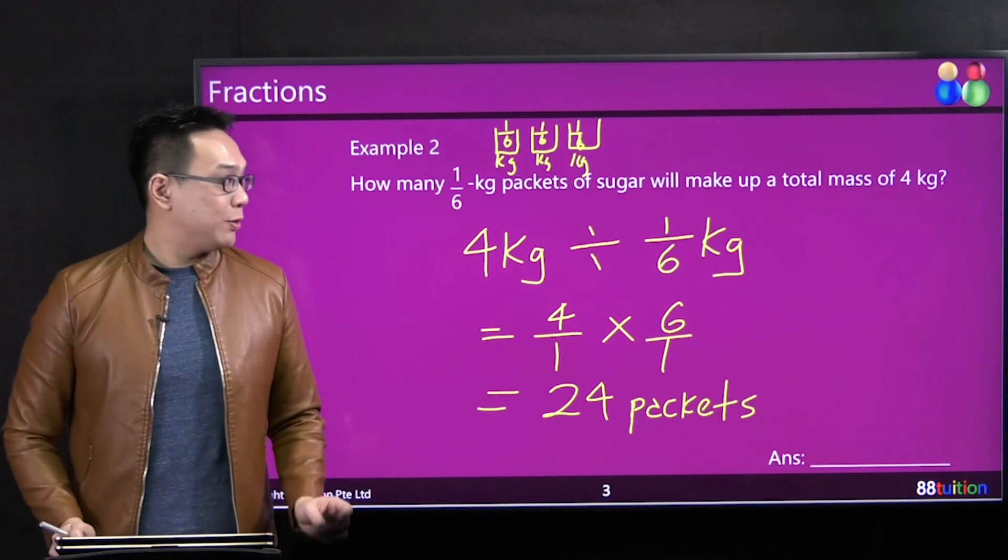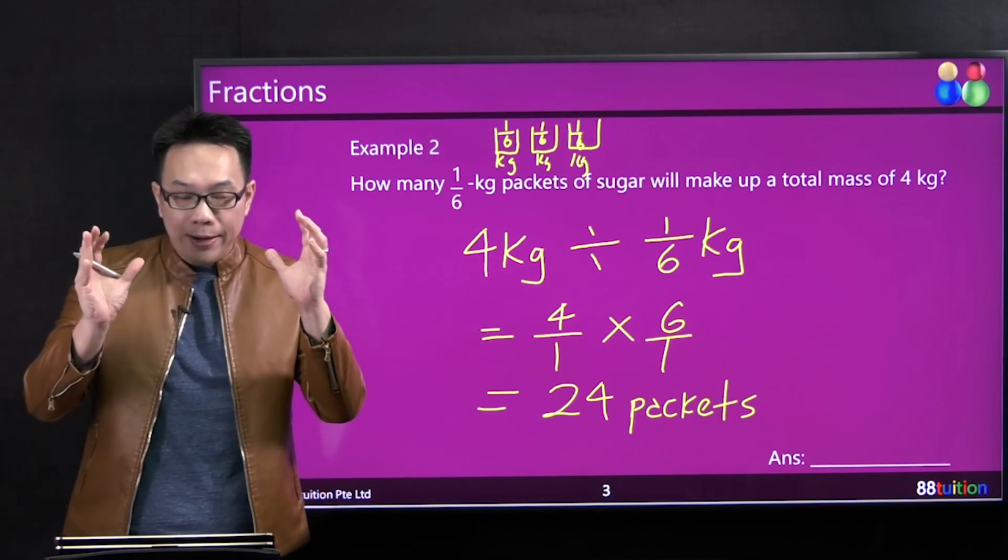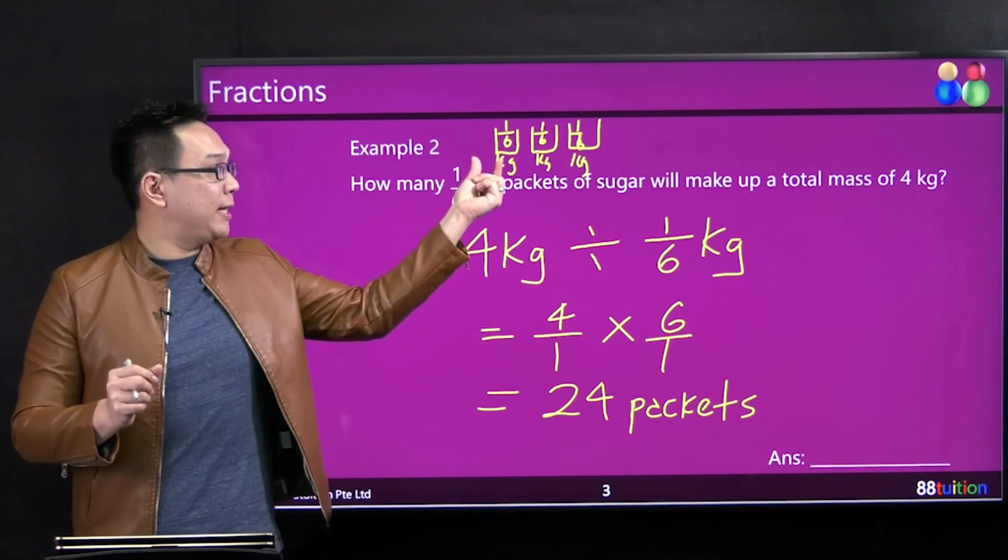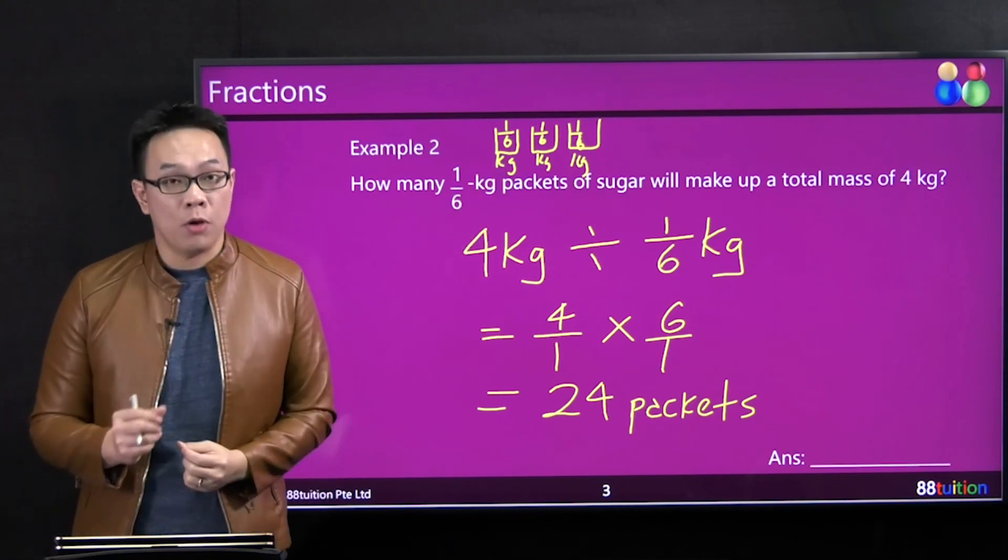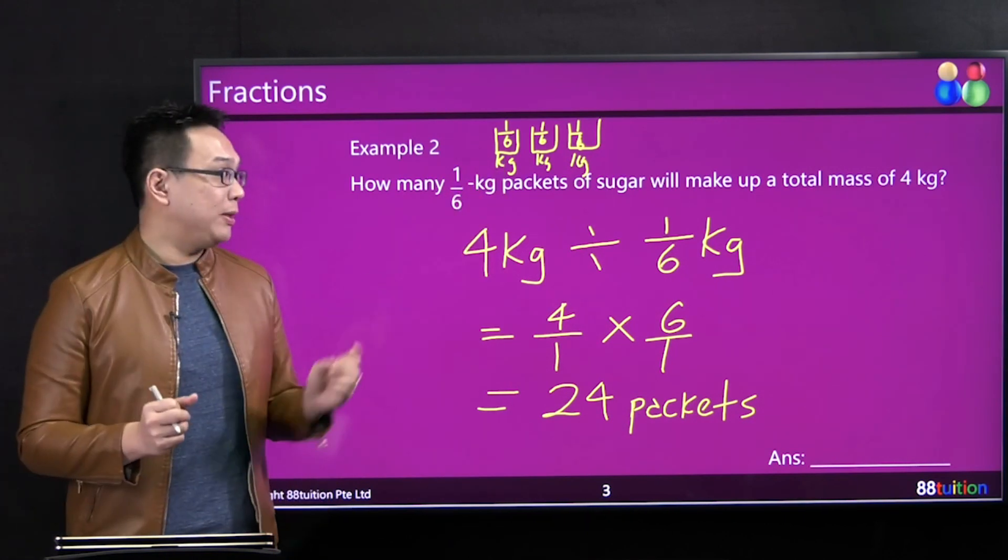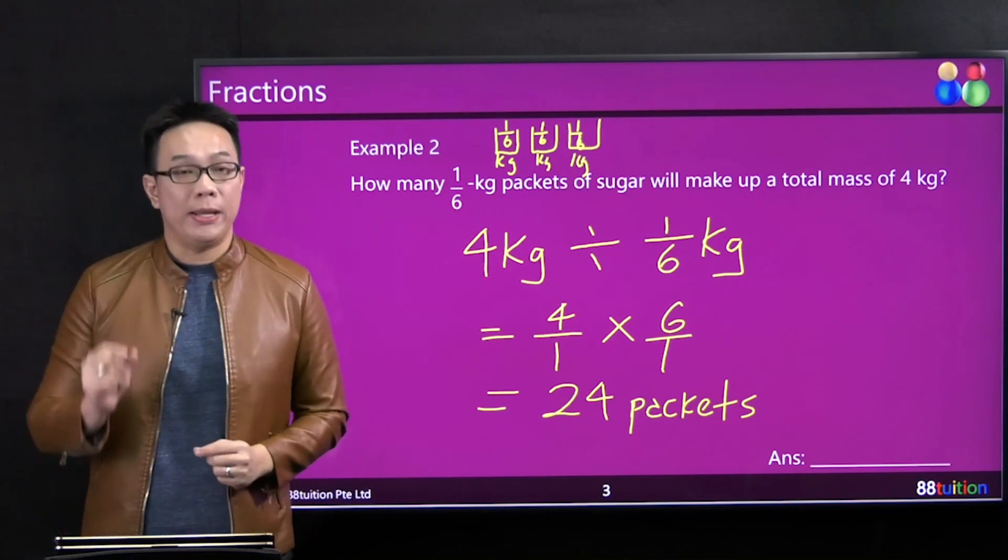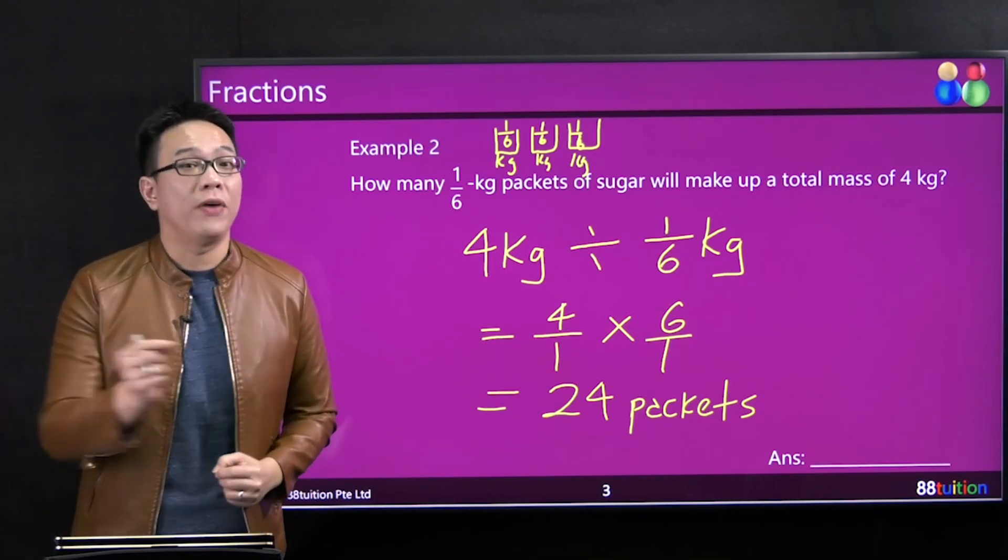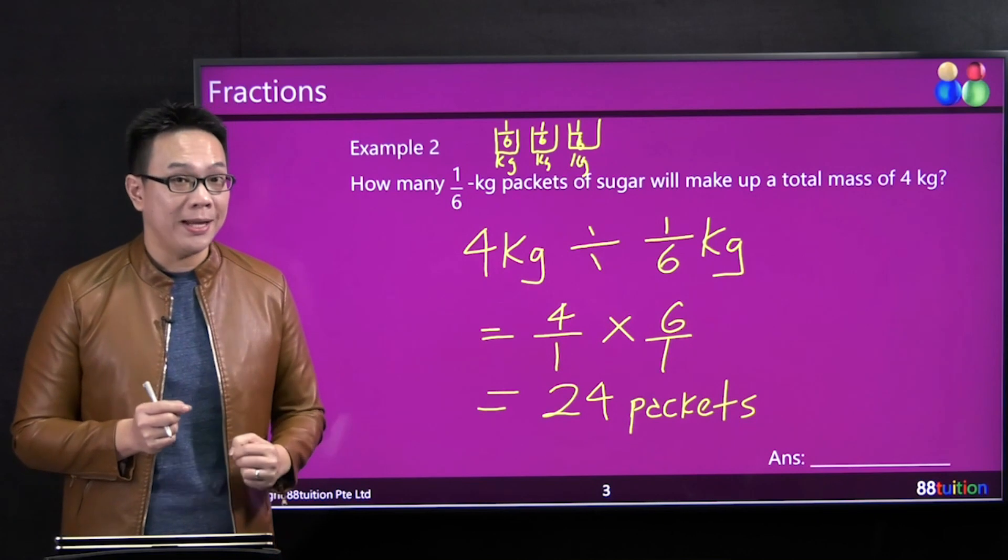Can you see that? So the total is this amount. How many 1/6 kg can you get from your 4 kg? You simply take the whole amount, divide by each packet which is 1/6 kg, to find how many packets.